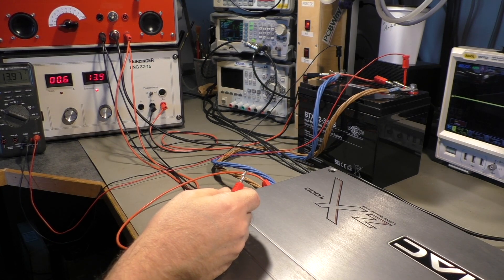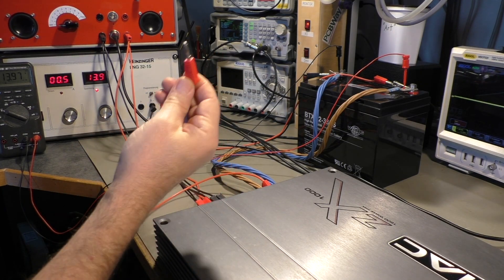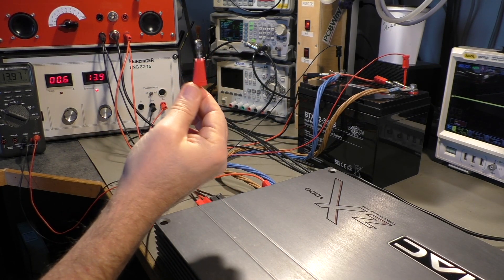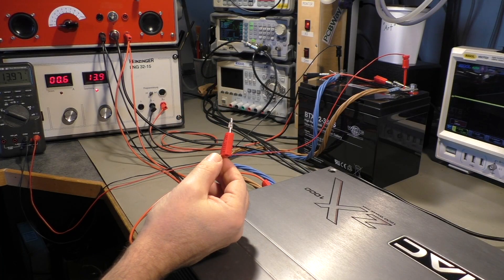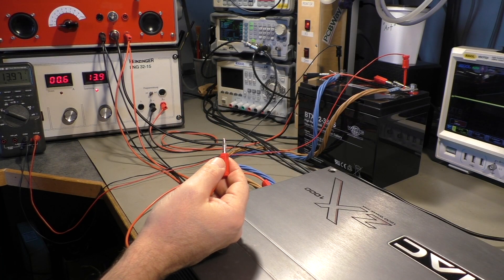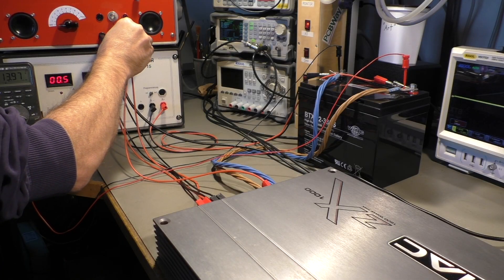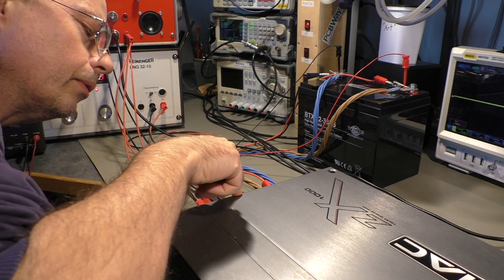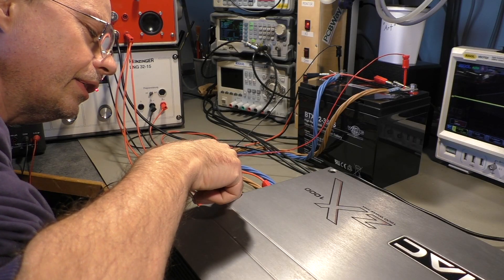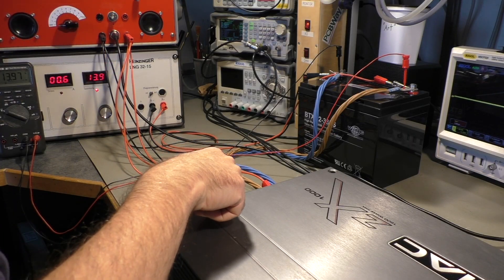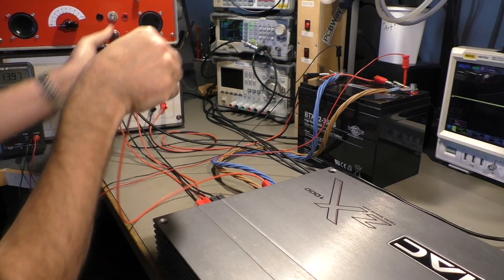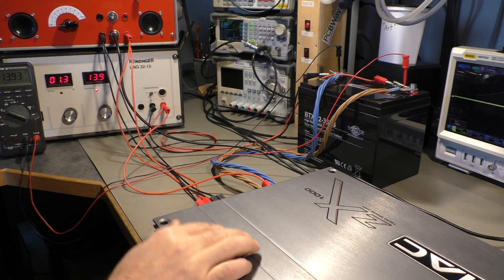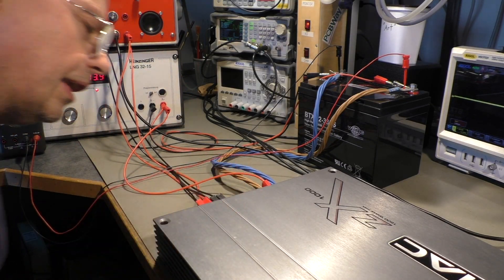The amplifier is already connected to the battery and that's the remote pin that has to go to positive 12 volt and that powers the amplifier on. Now we have a green light.